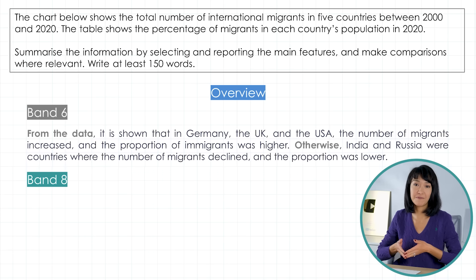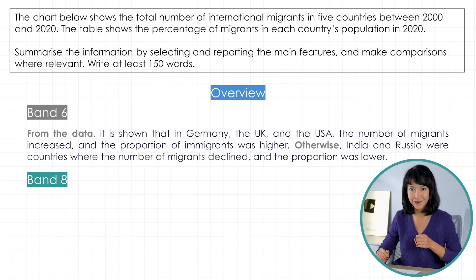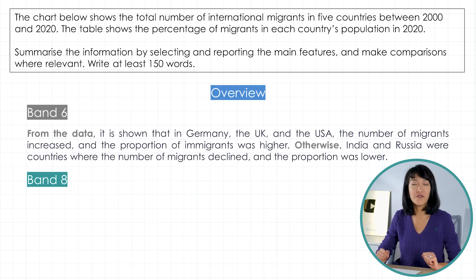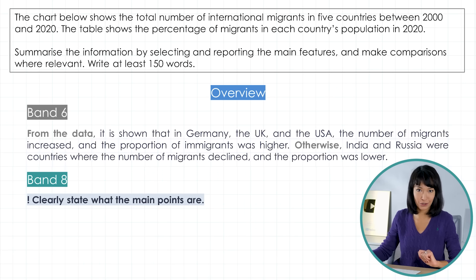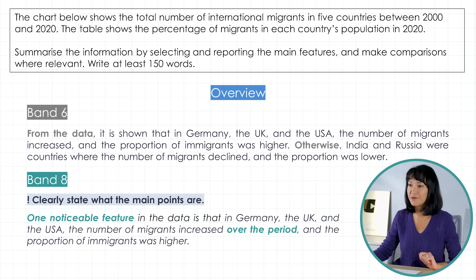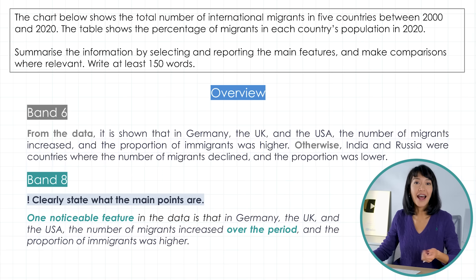Reading through this paragraph, I get the point. It's generally clear, but it could be made a lot clearer — and that's why it's a band 6 and not a band 8. It's important in the overview to really make your point and clearly state what the main points are. See how it looks: 'One noticeable feature in the data is that in Germany, the UK and the USA, the number of migrants increased over the period and the proportion of immigrants was higher.' The phrase 'one noticeable feature' underlines that this is our interpretation of what we see.